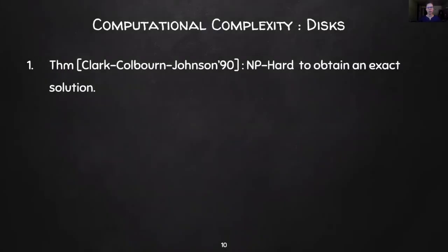Switching gears, we now consider disks in the plane. A theorem of Clark, Colbourn, and Johnson from 1990 shows that MIS of unit disks is NP-hard. Further, this hardness extends to several other geometric objects in the plane, such as squares and line segments.